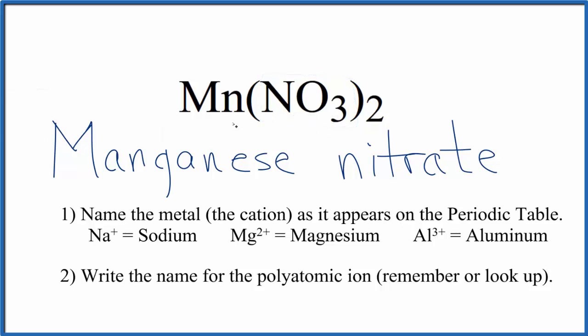So at this point, we have manganese nitrate as the name for Mn(NO3)2, but manganese here is a transition metal, so we have to think about the charges on the ions.